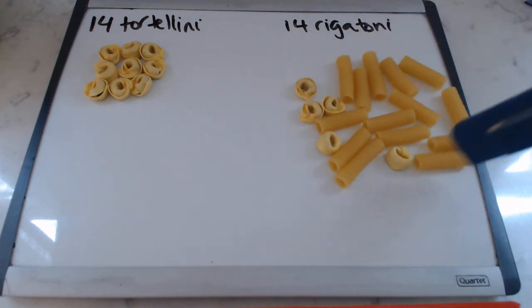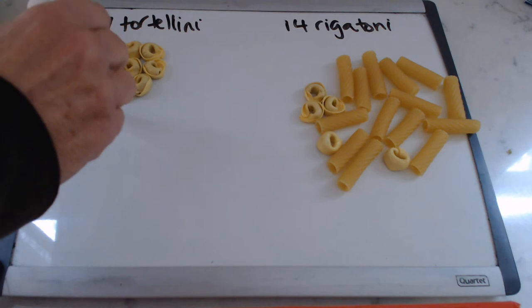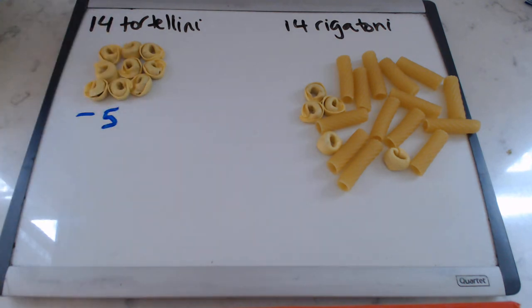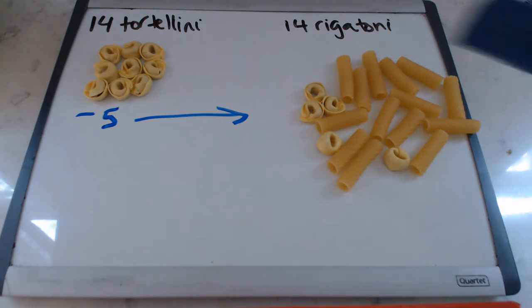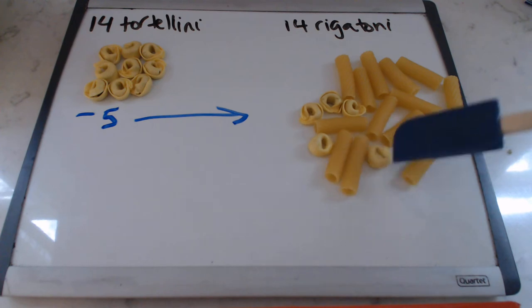So I started out with 14 of each. Now I've got minus 5 because I sent 5 over this direction. So now I mix those up and I need to pick 5 and send them back over to this side.